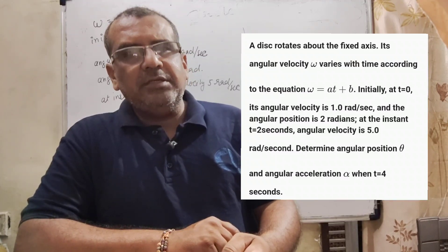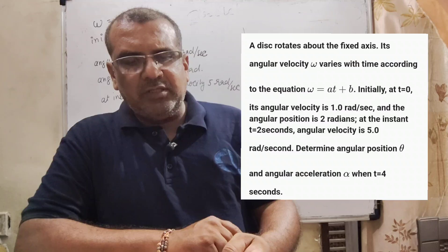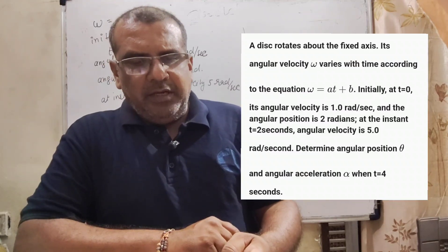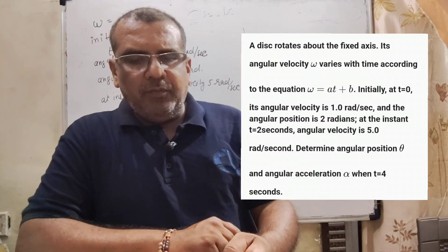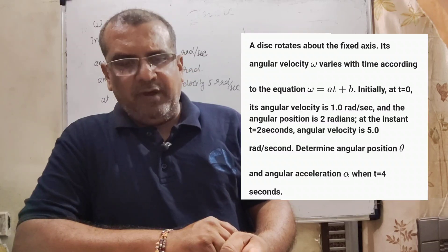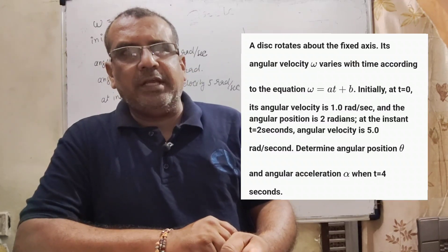At the instant t equal to 2 seconds, angular velocity is 5.1 radian per second. Determine angular position theta and angular acceleration alpha when t equal to 4 seconds.